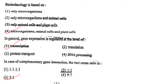Next one: In general, gene expression is regulated at the level of option 1, transcription; option 2, translation; option 3, protein transport; option 4, RNA processing. Answer is option 1: transcription.